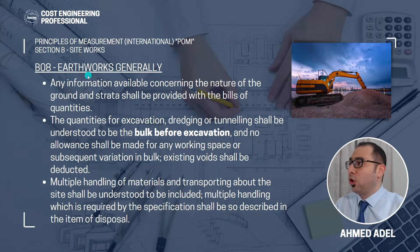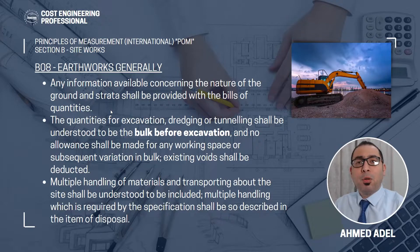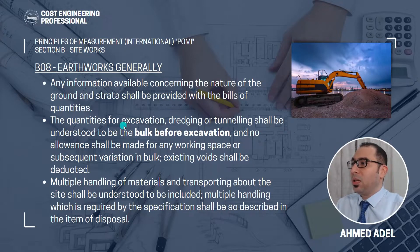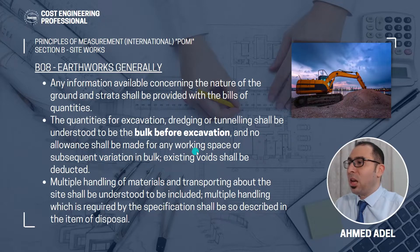Subsection number 8 is earthworks generally. Any information available concerning the nature of the ground and the strata shall be provided within the Bill of Quantities. If you have information about the soil layers where excavation will happen, you have to give the details in the BOQ. The quantities for excavation, dredging, or tunneling shall be understood to be the bulk before excavation, and no allowances shall be made for any working space or subsequent variation in bulk.